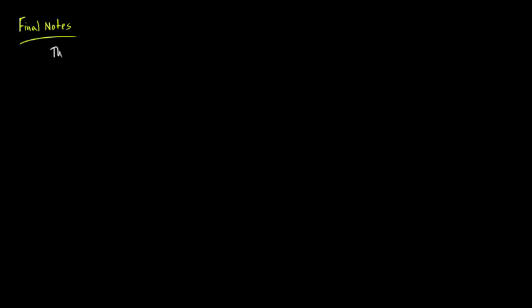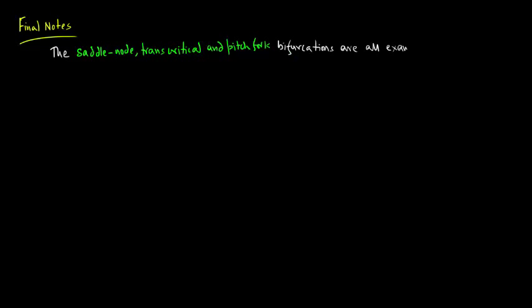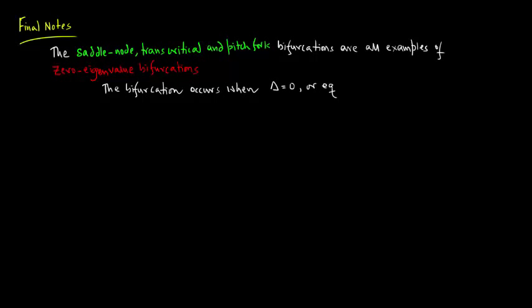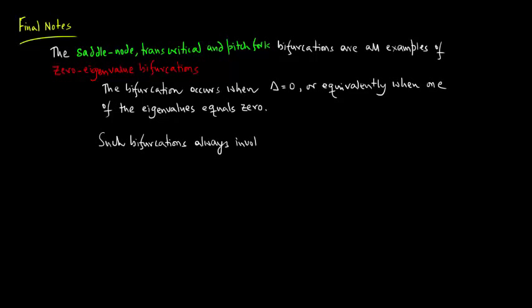We end with some final notes. The saddle-node, the transcritical, and the pitchfork bifurcations are all examples of zero-eigenvalue bifurcations. The bifurcation occurs when the determinant delta equals zero, or equivalently when one of the eigenvalues equals zero. Such bifurcations always involve the collision of two or more fixed points. Note that the pitchfork comes in two variants: a supercritical and a subcritical.